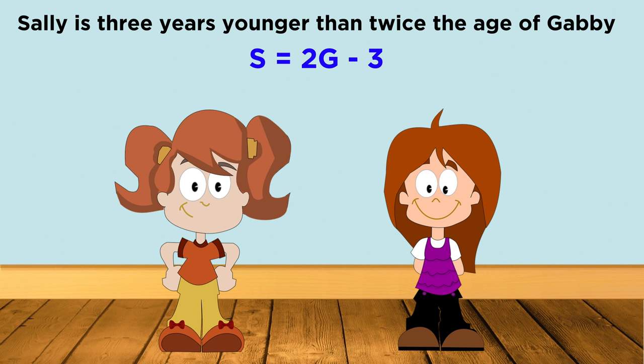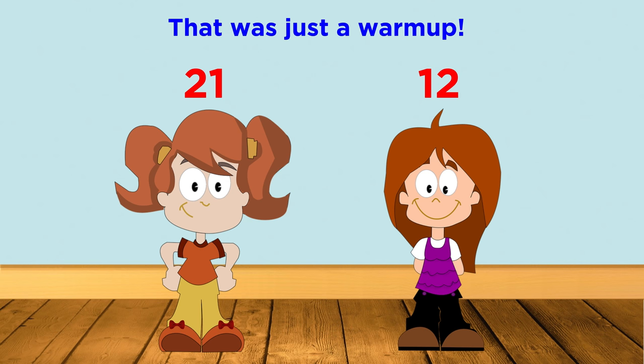Now we have a very simple equation to solve. We just plug in twelve for G, since that is Gabby's age, double it, and subtract three. Sally must be twenty-one. That was an easy one because we didn't have to do any algebraic manipulation, we just plugged in a number and evaluated.